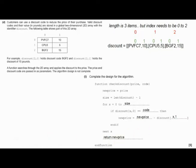Let's have a look at these new index numbers. So discount[0] brings me to this mini array, but discount[0][0] brings me to specifically PVFC7. The example they've given us is discount[2][0]. So discount[2] - we look at the mini array inside there - and then we look at 0 inside there. Discount[2][0]: we find the mini array, and then we find the item inside that mini array, which is BGF2. And you can see that's what they've written there for us.